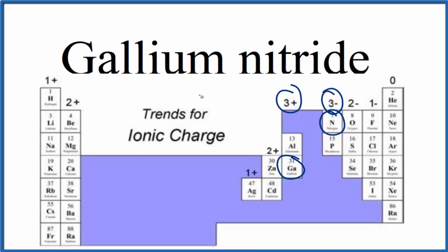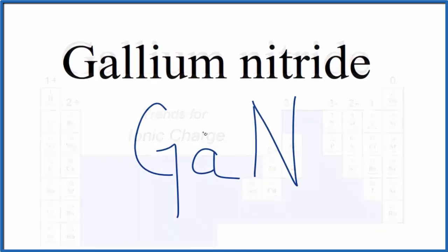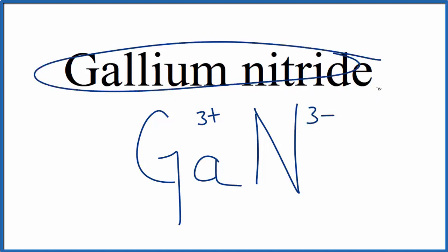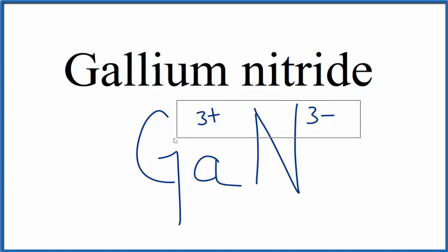The metal here, gallium, that was 3+, and then nitride, the non-metal, that's 3-. Since gallium nitride is neutral, it doesn't say ion after it, these charges need to add up to zero, give us a net charge of zero. So 3+ and 3- adds up to zero. This is the formula for gallium nitride, GaN.